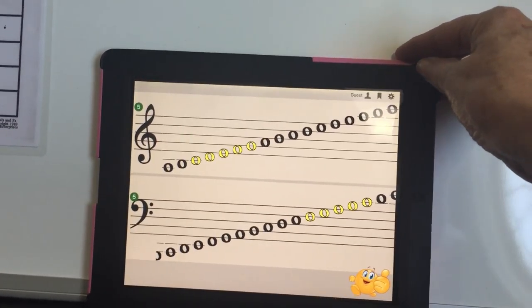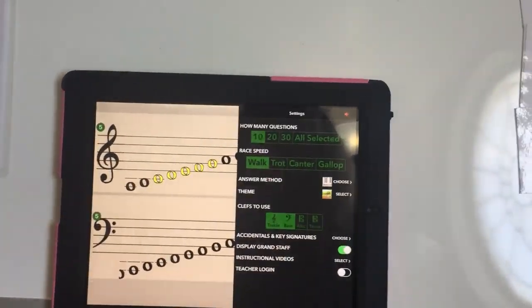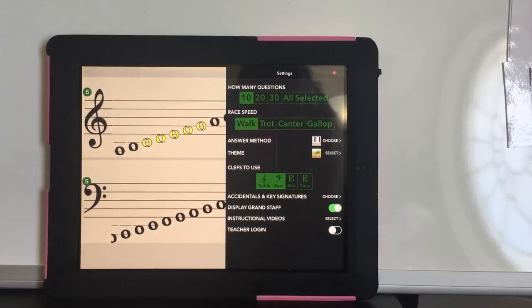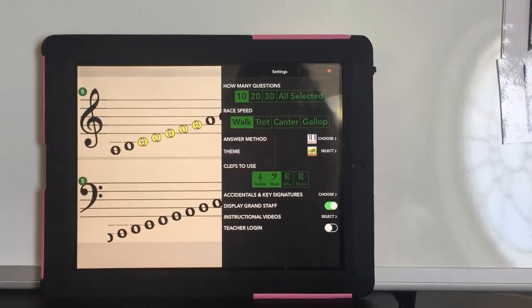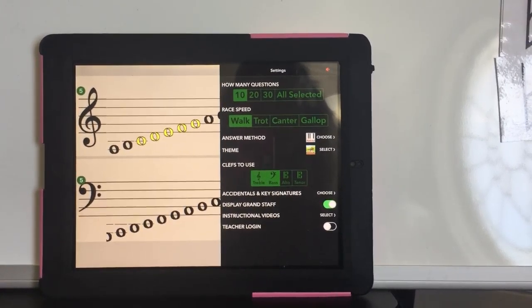For the bass clef, I'm going to select middle C and I'm going to go down to F. This will be the first group of notes that your child will want to learn.